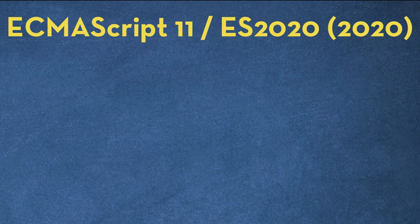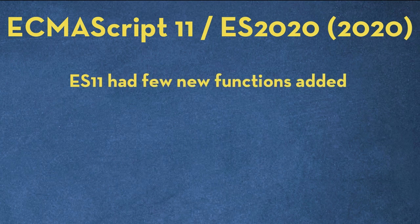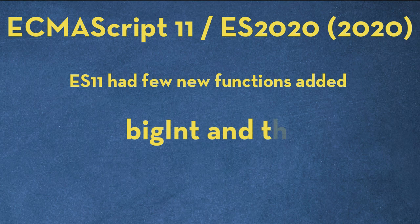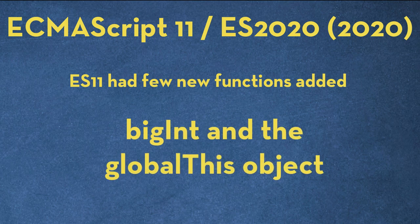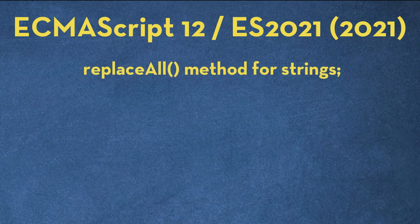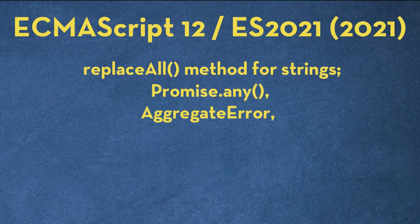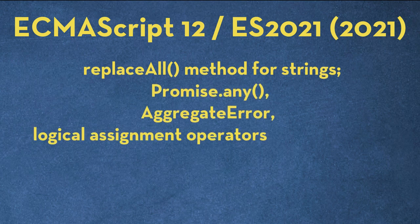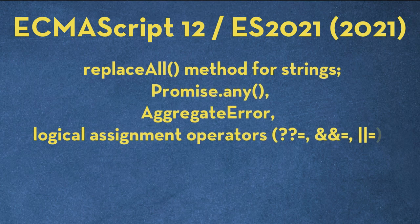ES11 was published in 2020 and had a few new functions added, but the two most loved additions are BigInt and the globalThis object. ES12, released in 2021, introduced the replaceAll method for strings, Promise.any, AggregateError, logical assignment operators, WeakRef, and a lot more.